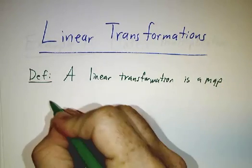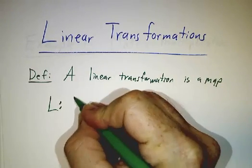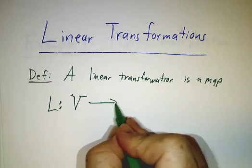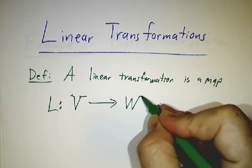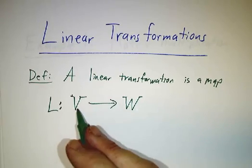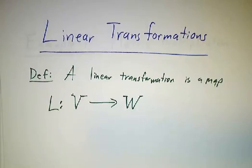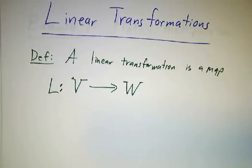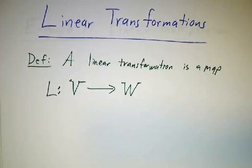What sort of map? It takes elements of one vector space and sends it to elements of another vector space. So it maps vector spaces to vector spaces and it does it in a very particular way. It does it in a way that respects the properties of the vector spaces.